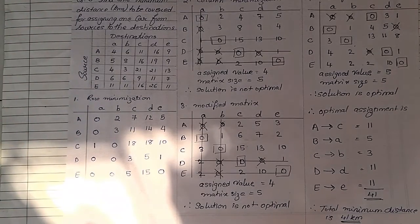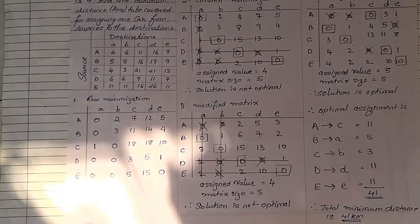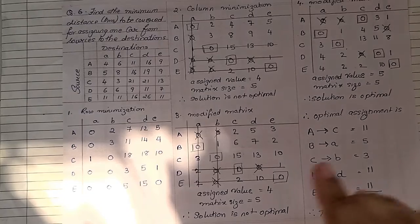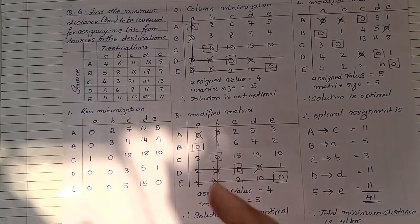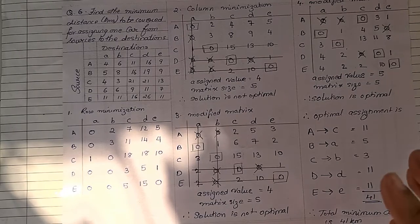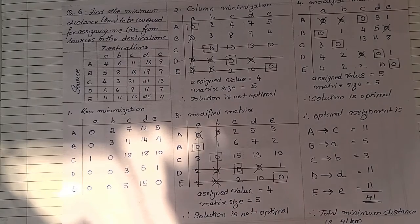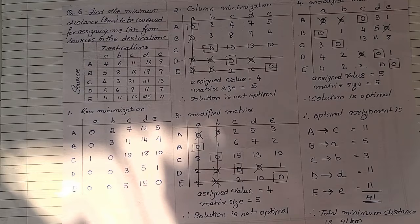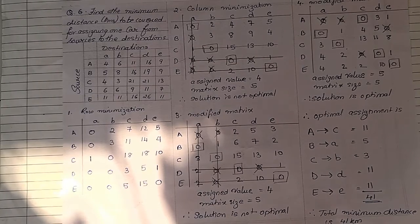So with this, we were able to complete one of the advanced sums from the topic of minimization, where we didn't get the optimal solution at the first go, so we had to modify it, and again we didn't get the optimal solution, so we modified it once more — and thereafter we got the optimal solution. Those who haven't watched question number five, which was also based on a similar advanced sum, do watch that. In our next video we will be starting off with maximization sums, which is the second main type under the assignment model. I hope everyone understood this sum — keep practicing as it's an important topic from the exam point of view. Thank you all.